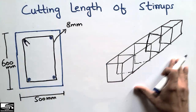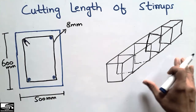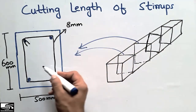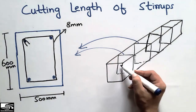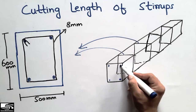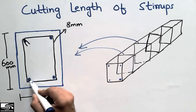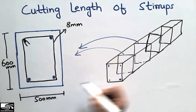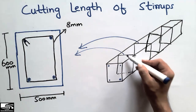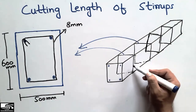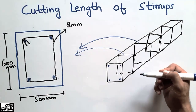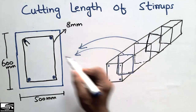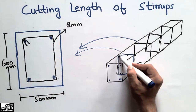This is the cross-section of the beam, and here I draw the 3D view of the beam. These are the stirrups — I draw the cross-section of the stirrups here. This is the beam with four longitudinal bars shown in both the section view and the 3D view. The stirrups hold the longitudinal bars and are also used to resist shear stresses.